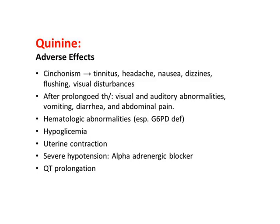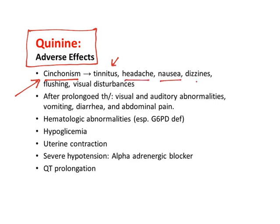Quinine deserves special mention because it has the highest number of adverse effects. It is obtained from cinchona bark and has a specific adverse effect known as cinchonism: tinnitus (ringing in the ears), headache, nausea, dizziness, flushing (redness of face), and visual disturbances. Other alkaloids from cinchona bark — quinine, quinidine, cinchonine, cinchonidine — all show cinchonism. After prolonged use, visual and auditory abnormalities, vomiting, diarrhea, and abdominal pain occur.